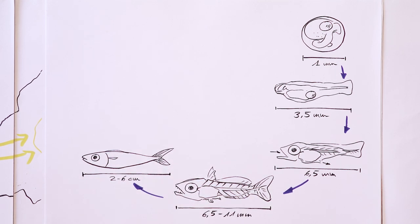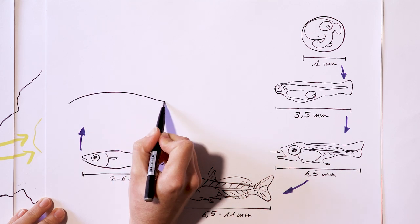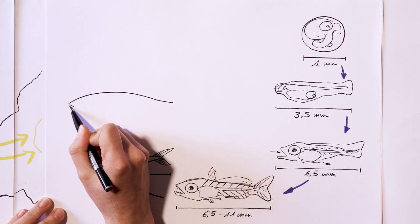Now the larva finally looks like a fish. This little tuna has survived the trickiest part. Now all it has to do is grow.